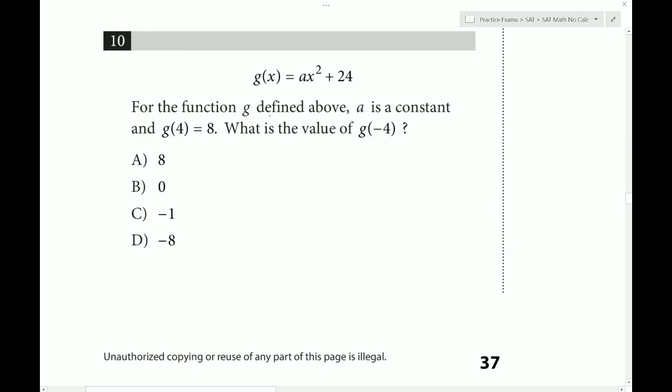Okay, question 10. Again, for the function G defined above, A is a constant, and G of 4 equals 8. So what they're doing here is they're plugging in 4 as their input. And another word for input, of course, is X value. So 4 is the X value, and 8 is the Y value. Okay, so we will do the same. We'll plug in 4 for our X value, 8 times 4 squared plus 24, and we'll set that equal to the output, which is 8.